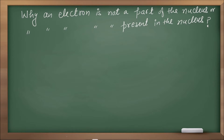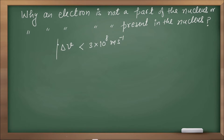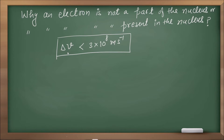Because in case the electron is to remain in the nucleus, the uncertainty in its velocity must be less than the speed of light. The maximum velocity possible is 3 × 10⁸ meters per second, which is the speed of light. So the uncertainty in velocity must be less than the speed of light.